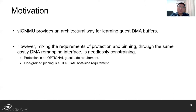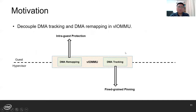However, we argue that mixing the requirement of protection and pinning through the same costly DMA remapping interface is needlessly constraining. Intra-guest protection is an optional guest-side requirement, whereas fine-grained pinning is a general host-side requirement for efficient memory management. The host needs the capability to efficiently track guest DMA buffers. So how about we decouple the DMA tracking and the DMA remapping interfaces in VIOMMU?